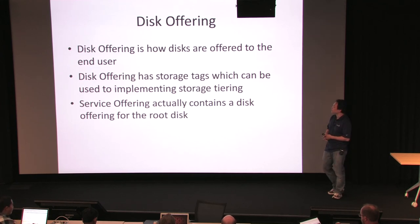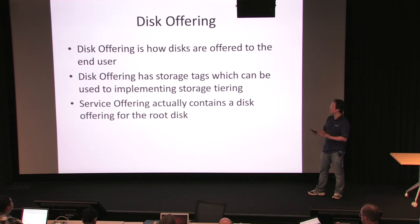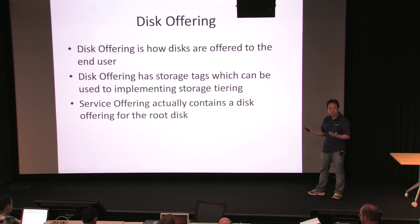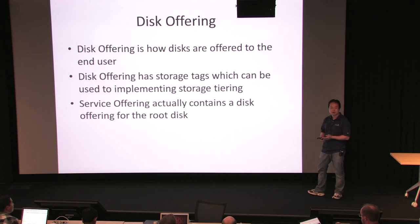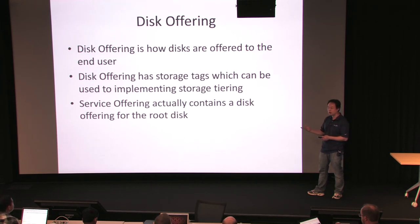This offering is how we show how an operator would use and show to end users what type of disk they're using — it has things like size. Our service offering in CloudStack actually contains a disk offering for the root disk, which is something most people do not know. So our service offering contains CPU and memory, but it also has disk characteristics for the root disk.